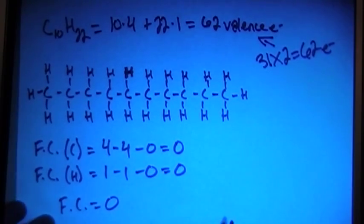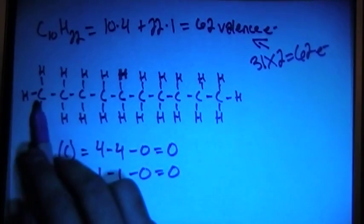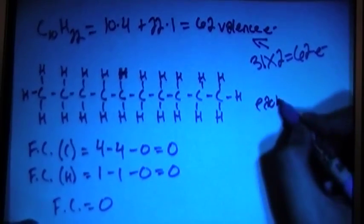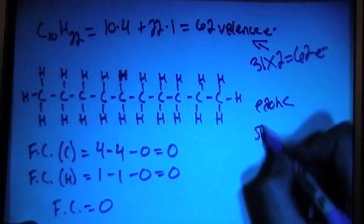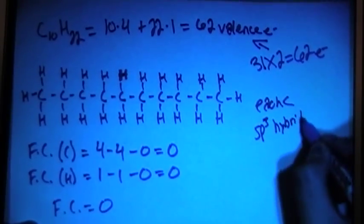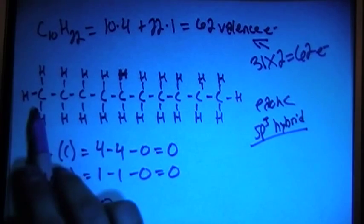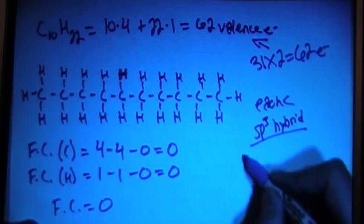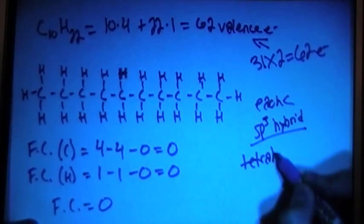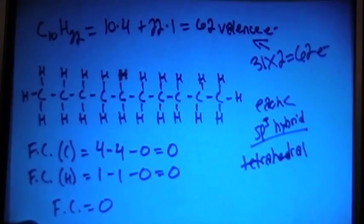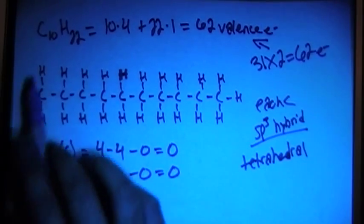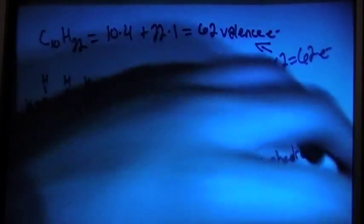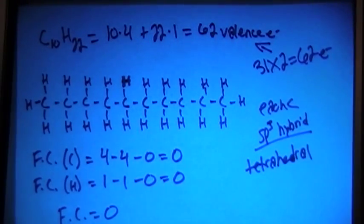We can go ahead and talk about shape real quick. Each carbon atom has 4 bonding sites, which means that each carbon is going to be SP3 hybridized. And when it's SP3 hybridized, that means that each carbon is a central atom of a tetrahedral shape. So that means that this C10H22 is really just a bunch of tetrahedrals kind of building off of each other just all the way down the line.